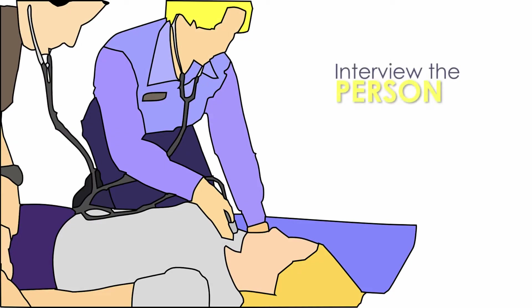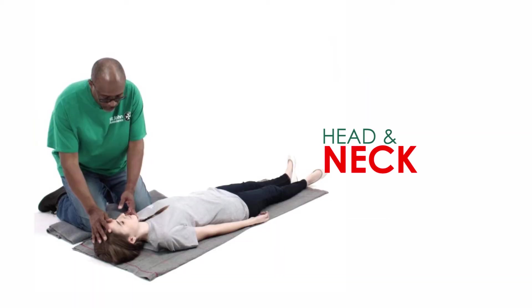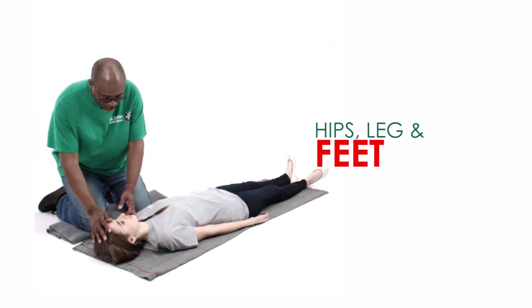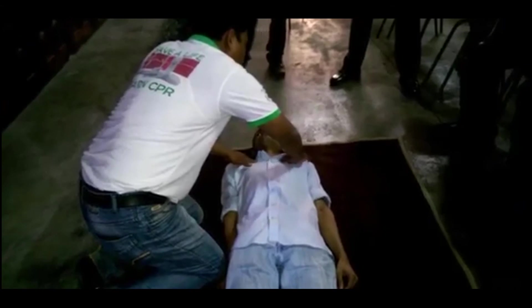Interview the person and gather more information about the patient, like name, age, contact of family members, and events leading up to the incident. Check the head and neck, shoulders, chest and abdomen, hips, legs and feet, and arms and hands for signs of injury. Provide care consistent with your knowledge and training according to the conditions you find.